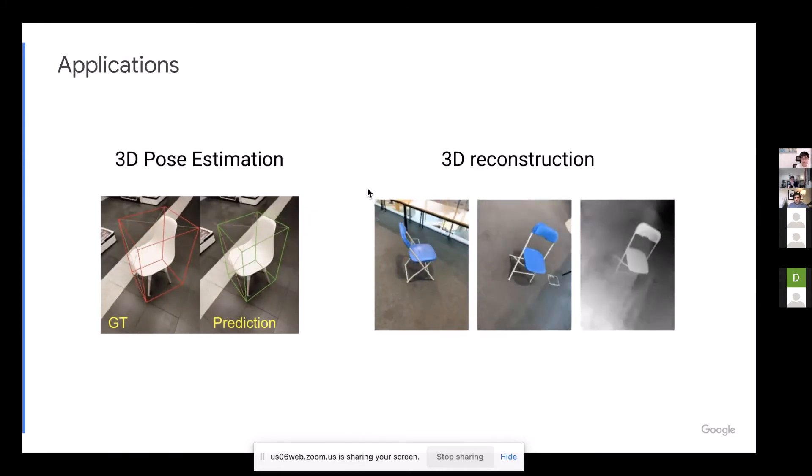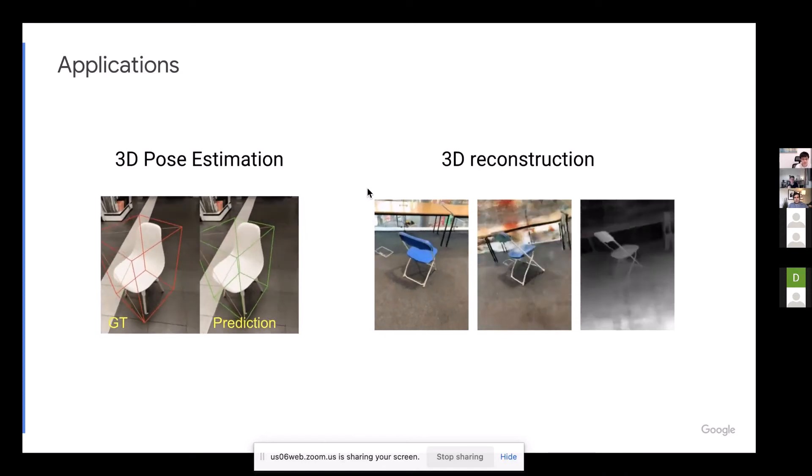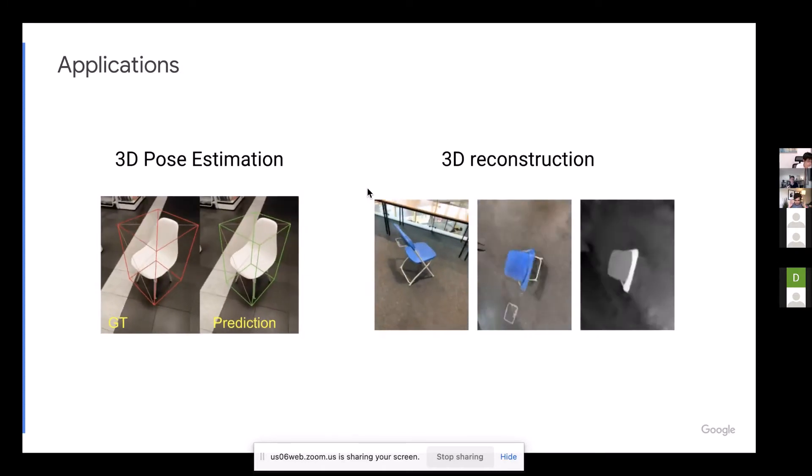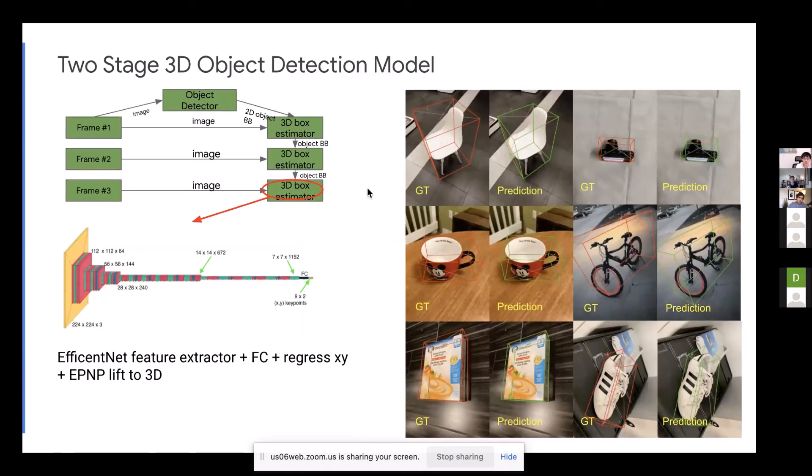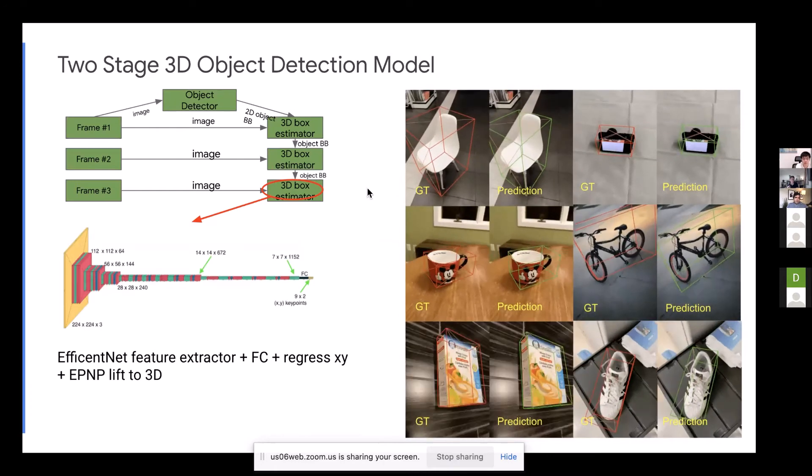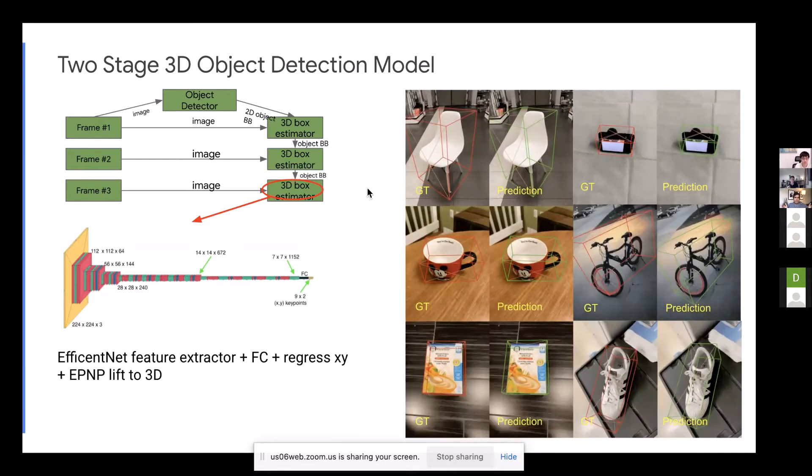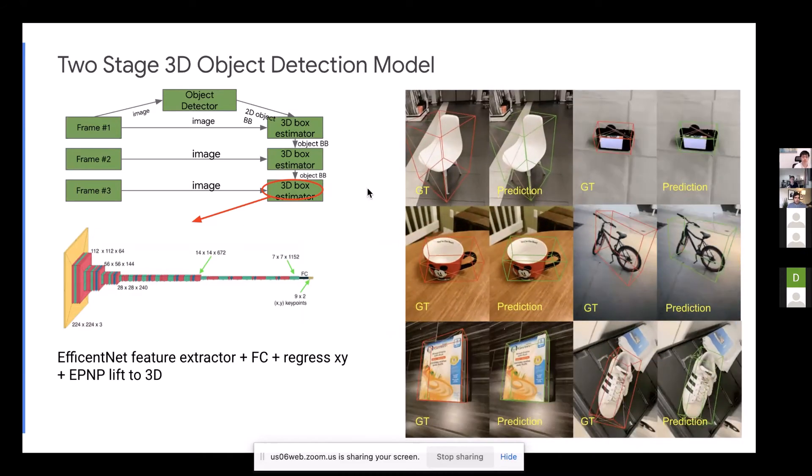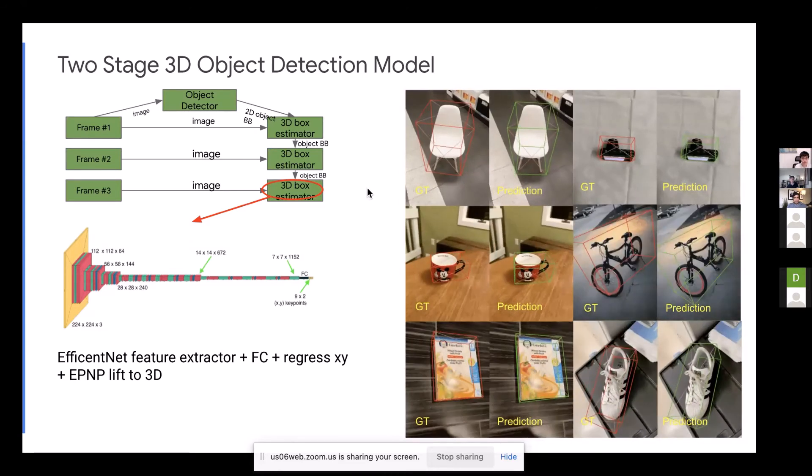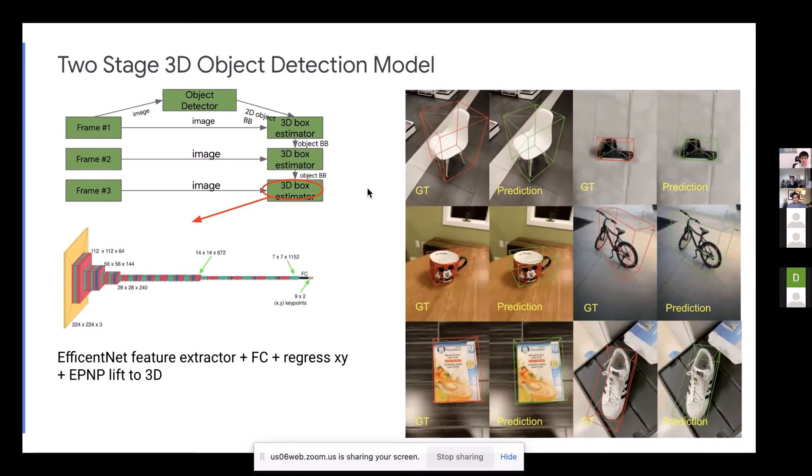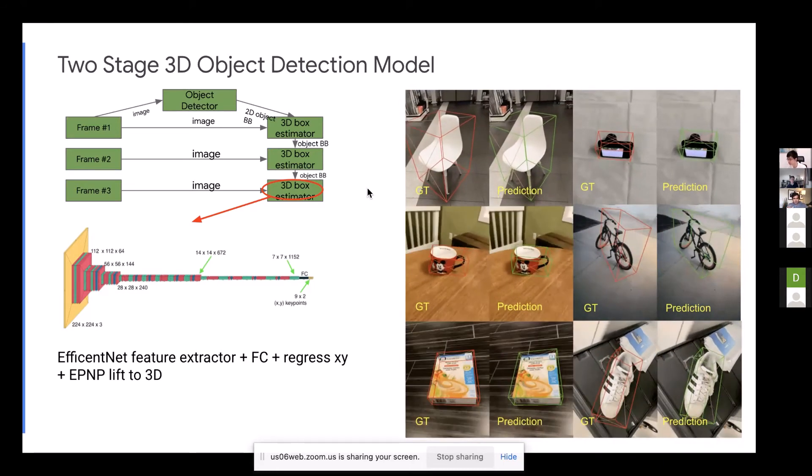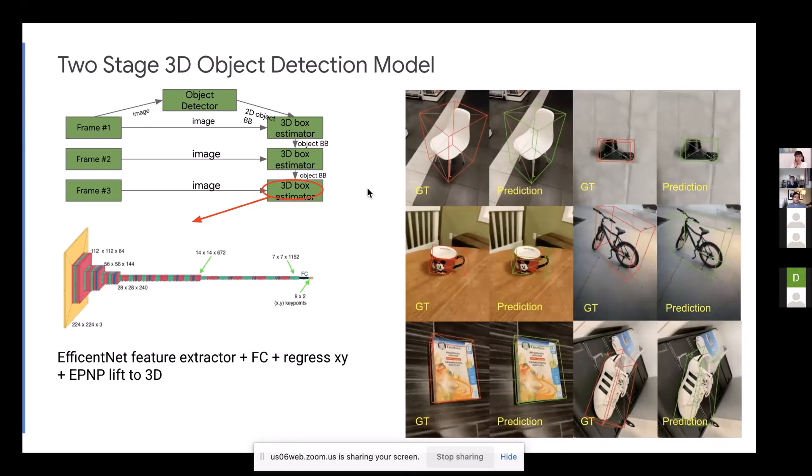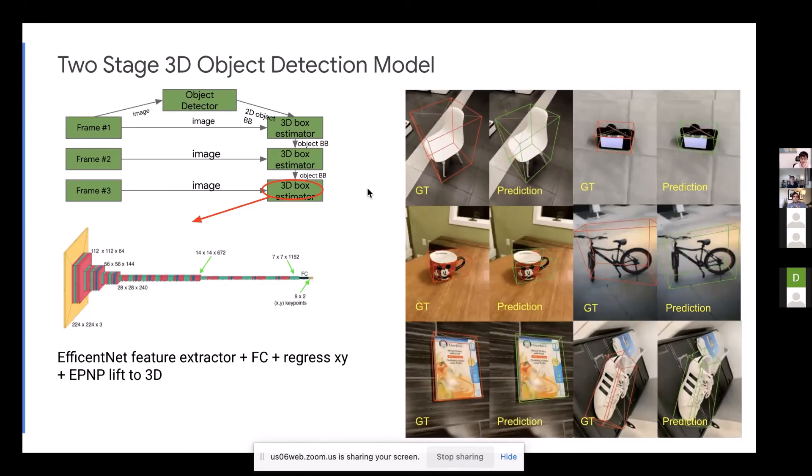So I'm going to talk about two applications that we tried to provide as baseline to put our dataset on. One is 3D pose estimation and the other one is 3D reconstruction. And if you come up with a new application for it, I'm all ears. So for 3D object detection, we came up with this very simple baseline model that we use the EfficientNet to extract features. And then we add a fully connected and then a regression layer to regress the XY keypoint of the 3D bounding box. And then it is followed by EPNP to lift these XY keypoints to 3D. And that would give us a 3D bounding box. So this baseline model, it works reasonably well. You can see some examples on the right side here.